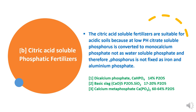The examples of citric acid soluble Phosphatic fertilizers are Dicalcium Phosphate, which contains 14% P2O5; Basic Slag, which contains 10–20% Phosphorus as P2O5; and Calcium Metaphosphate, which contains 60–64% P2O5 Phosphorus.